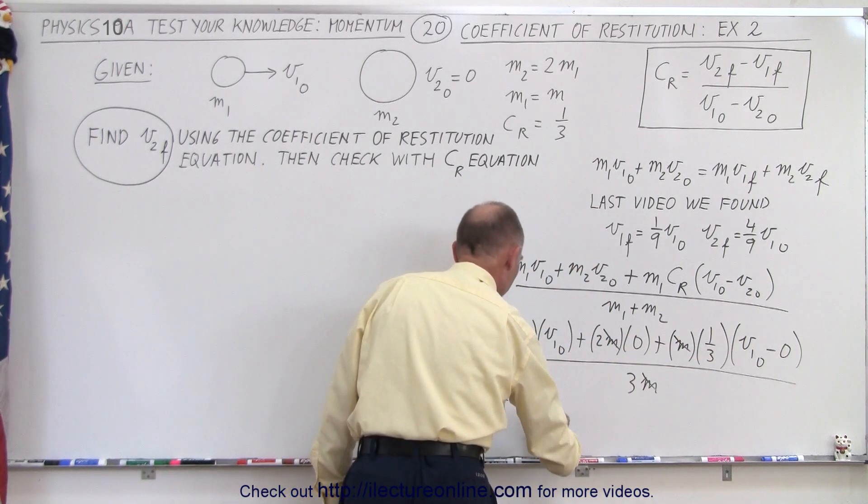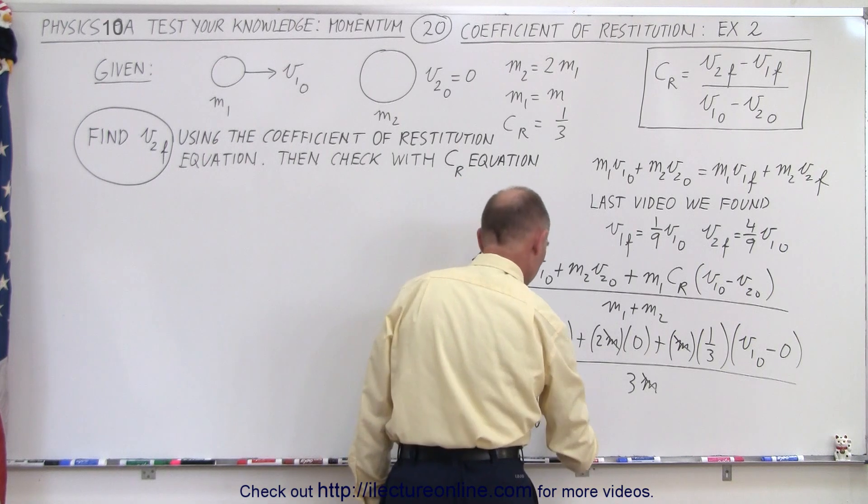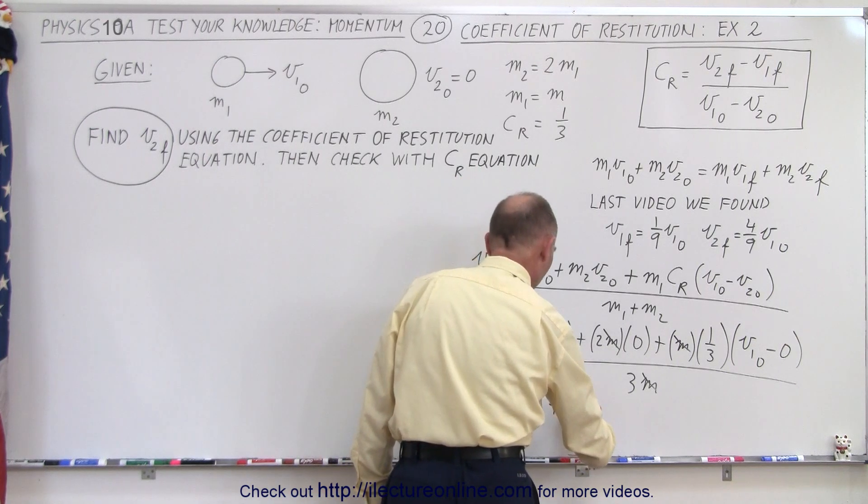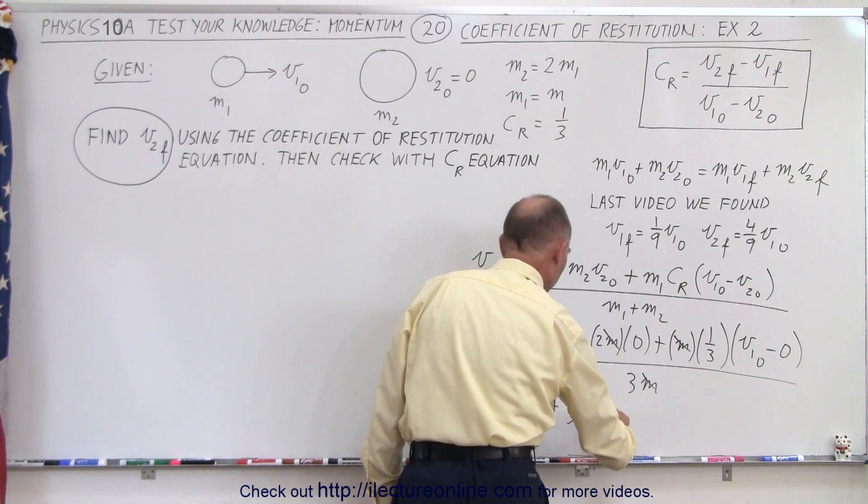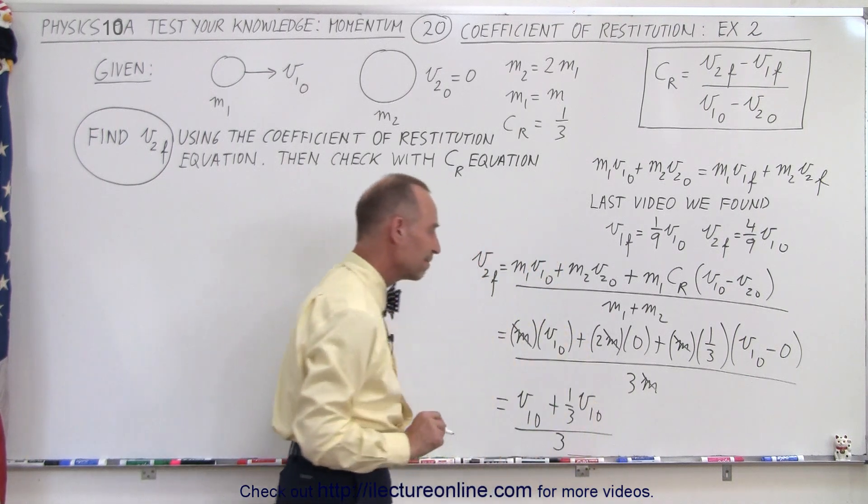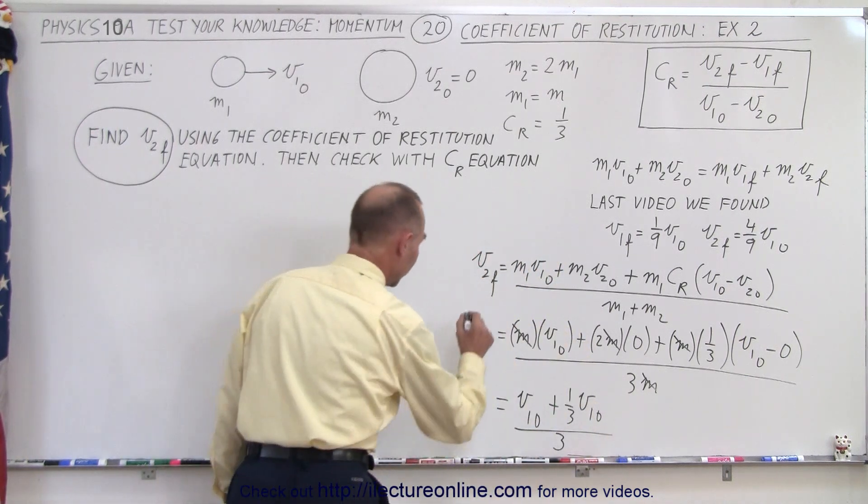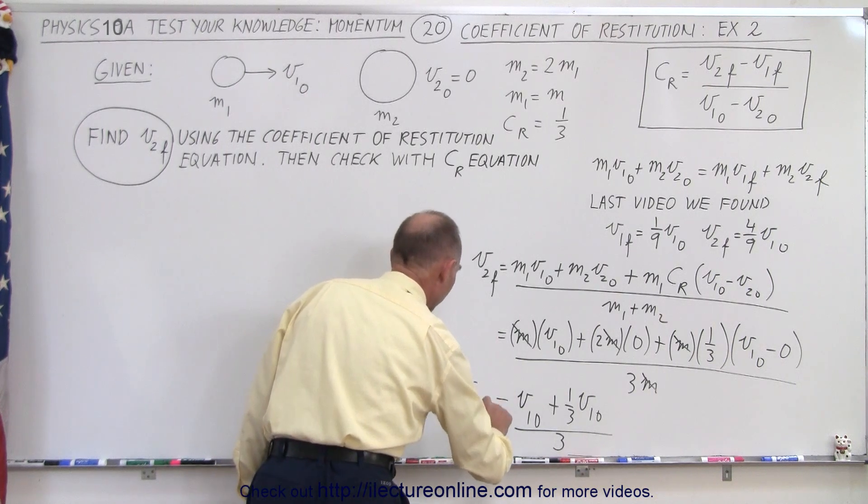We can eliminate all the m's, and so then this is equal to v1 initial plus one-third v1 initial divided by 3.